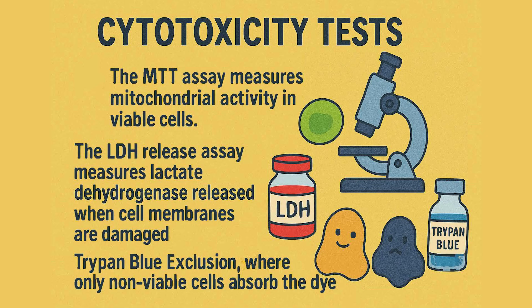Scientists have developed several methods to test cytotoxicity. The most common include the MTT assay, a colorimetric test which measures mitochondrial activity in viable cells — living cells turn the yellow MTT compound into a purple compound, while dead cells don't. The LDH release assay measures lactate dehydrogenase released when cell membranes are damaged. And the Trypan blue exclusion assay uses dye to differentiate live and dead cells.